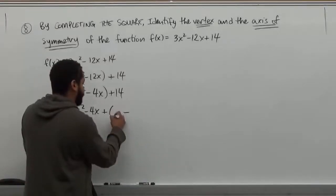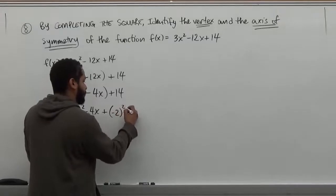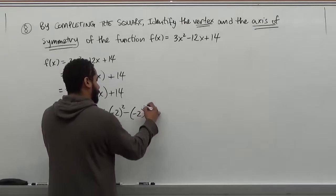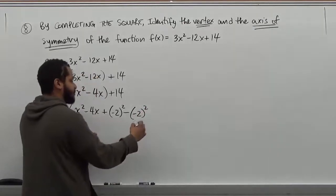Now, what's half of -4 is the question. Half of -4 is -2. We're going to square that. And we're going to add and subtract this perfect square of -2. Because when we add and subtract it, it equals 0.